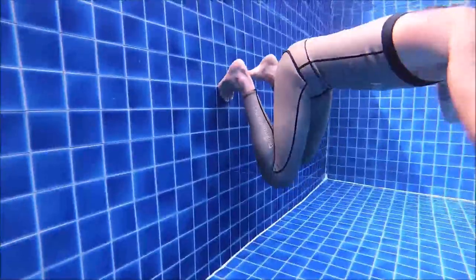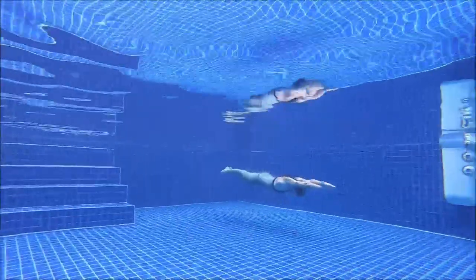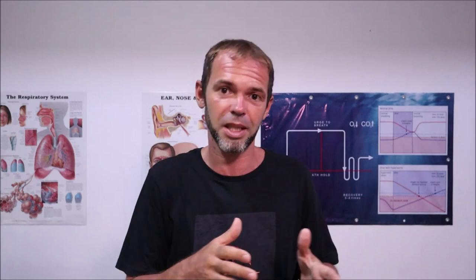Sub-skill number one is pushing from the wall. You do your relaxation, take a big breath in, take a horizontal position underwater, and then push from the wall keeping your arms in a streamlined position, and glide as long and as far as possible. If you're well streamlined you can glide quite far. If you're coming up to the surface or falling to the bottom, you need to readjust your buoyancy.